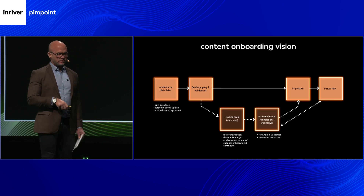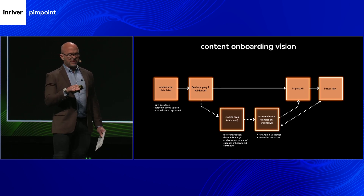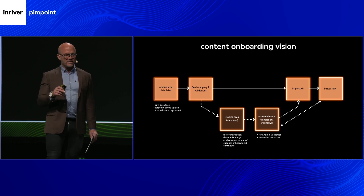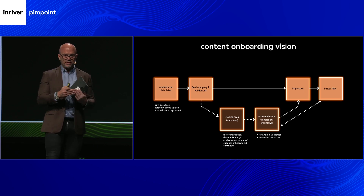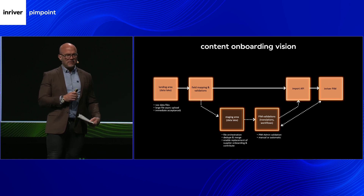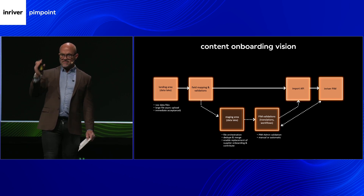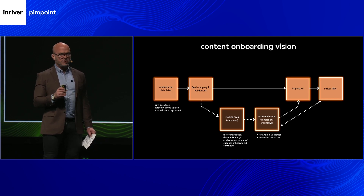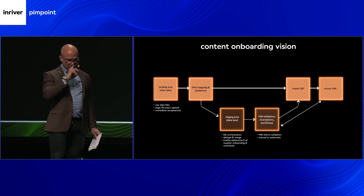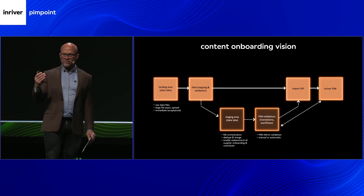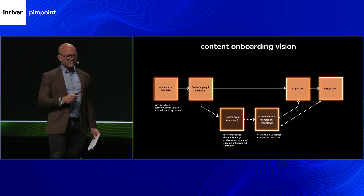Looking beyond this year, we will evolve it even further with the staging area shown at the bottom. In the landing area we work with files; in the staging area we work with data. Here we will continue adding functionality such as multiple file orchestration to handle multiple file sequences, deduplication and merge functionality for products getting data from multiple sources. This also enables the replacement of the supplier onboarding and contribute features — which I know many customers are interested in. This is also where we can start adding AI functionality.